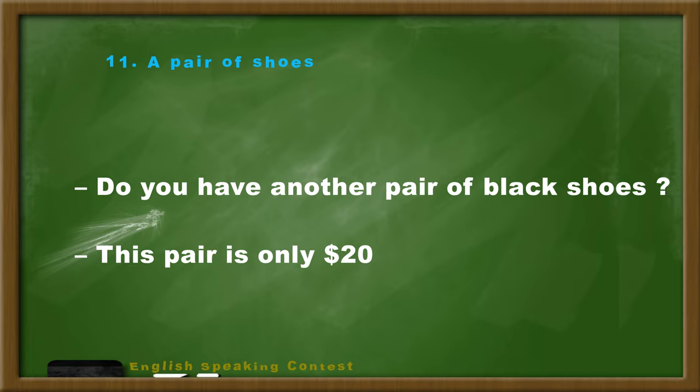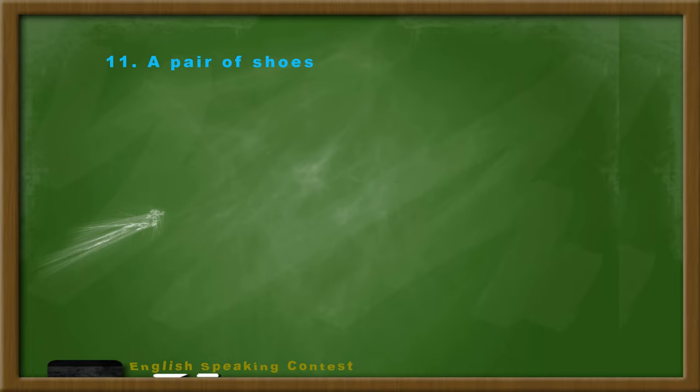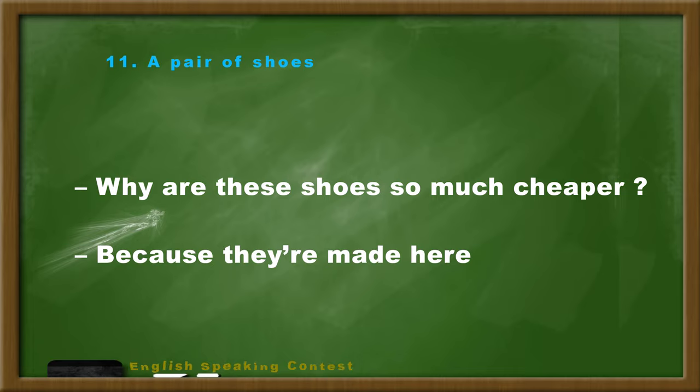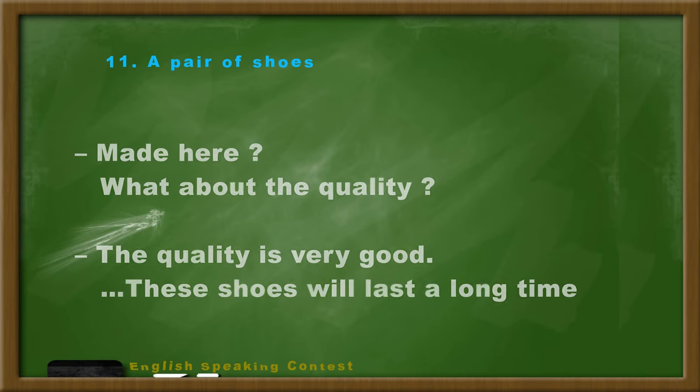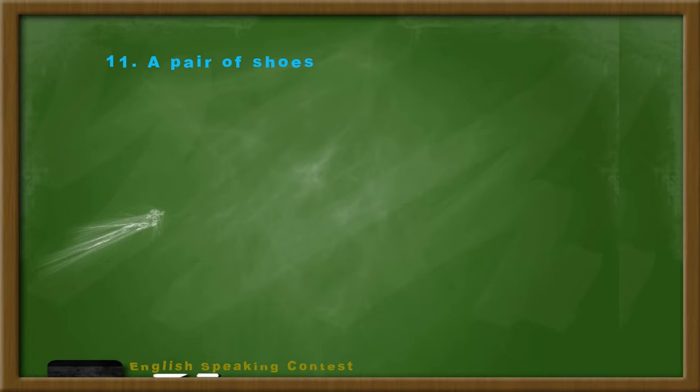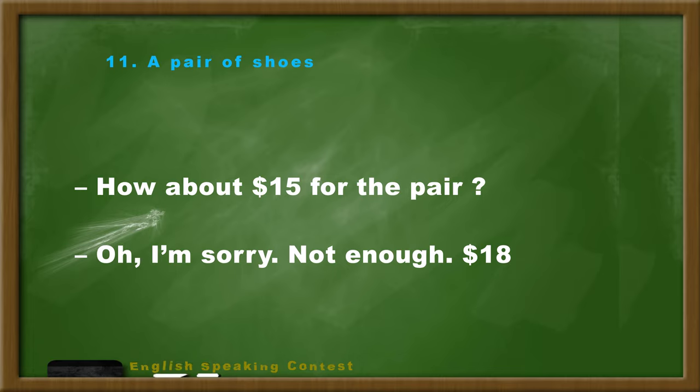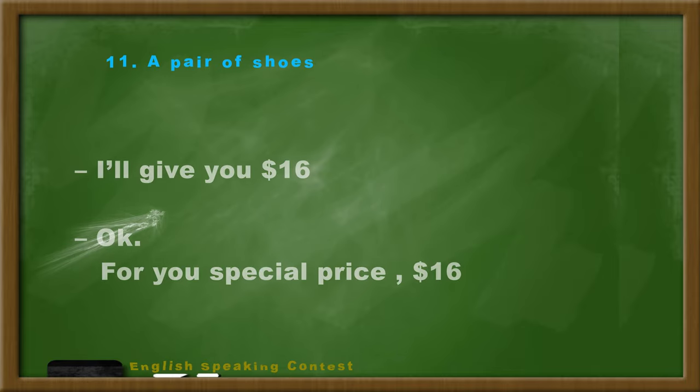Do you have another pair of black shoes? This pair, only $20. Why are these shoes so much cheaper? Because they're made here. Made here. What about the quality? The quality is very good. These shoes will last a long time. How about $15 for the pair? Oh, I'm sorry, not enough. $18. I'll give you $16. Okay, for you, special price, $16.